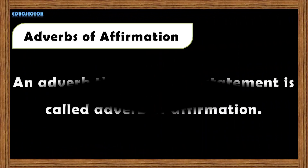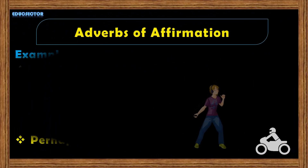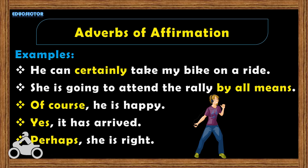An adverb that affirms a statement is called an adverb of affirmation. For examples: 'He can certainly take my bike on a ride.' 'She is going to attend the rally by all means.' 'Of course he is happy.' 'Yes, it has arrived.' 'Perhaps she is right.' Here the words certainly, by all means, of course, yes, perhaps are all adverbs of affirmation.